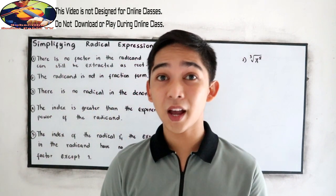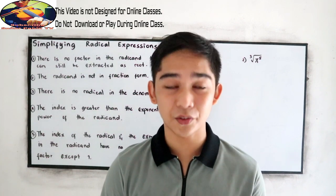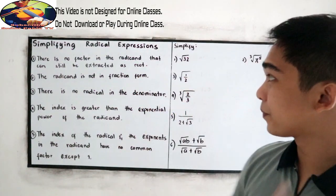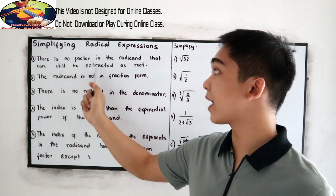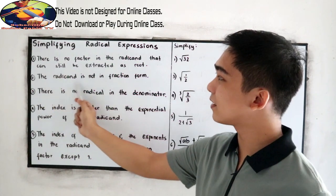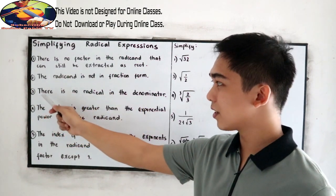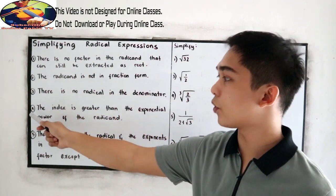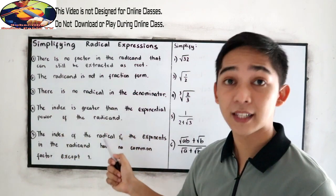To simplify a radical expression, it must have the following characteristics. First, there is no factor in the radicand that can still be extracted as a root. Second, the radicand is not in fraction form. Third, there is no radical in the denominator. And fourth, the index is greater than the exponential power of the radicand.